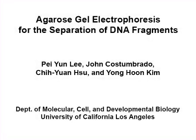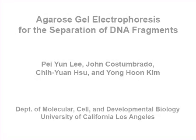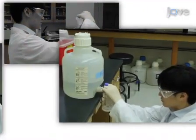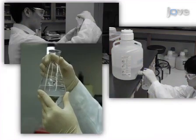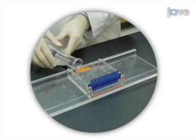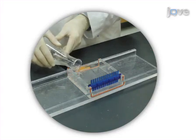The overall goal of this procedure is to separate DNA fragments of varying sizes. This is accomplished by first preparing a gel with the appropriate concentration of agarose and a fluorescent dye. The second step is to pour the gel into an appropriate mold and allow it to set.